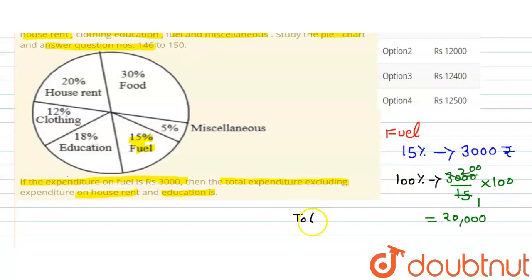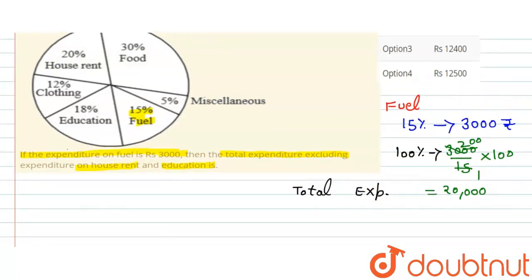Total expenditure is equal to 20,000. Now, for expenditure excluding house rent and education, total expenditure is 100% minus what we have not taken. House rent is 20% minus 20%, then education is 18% minus 18%, so that equals 62%.